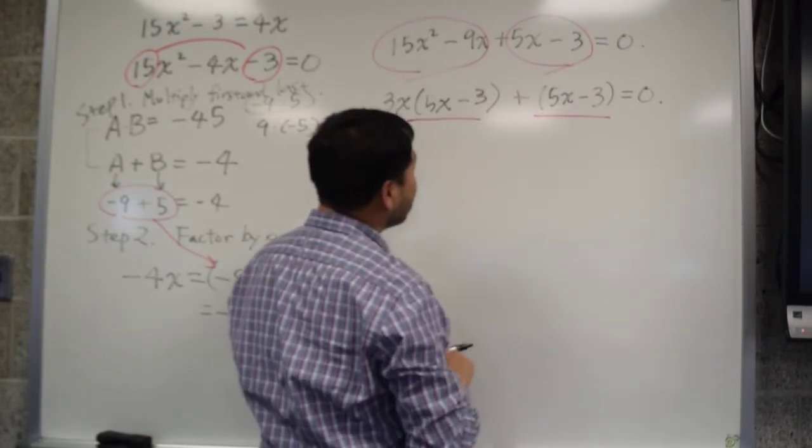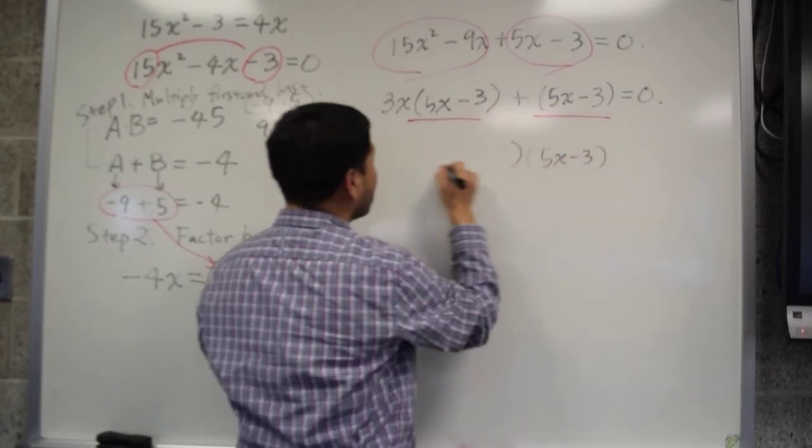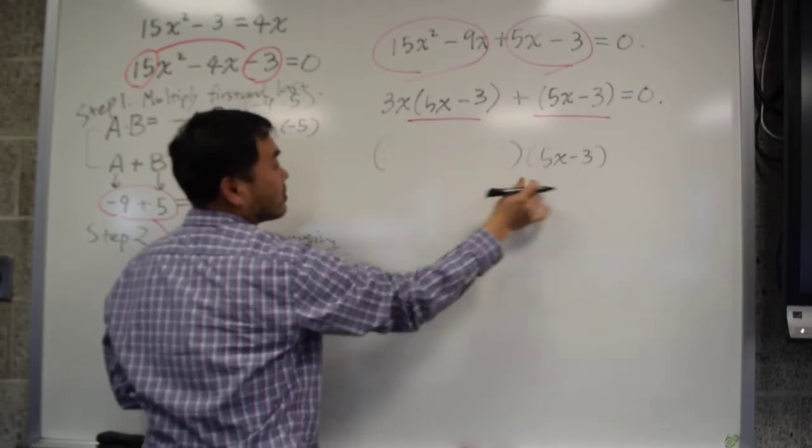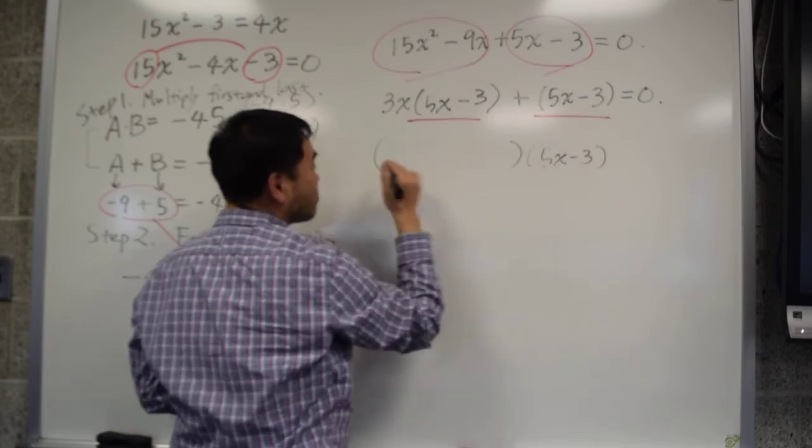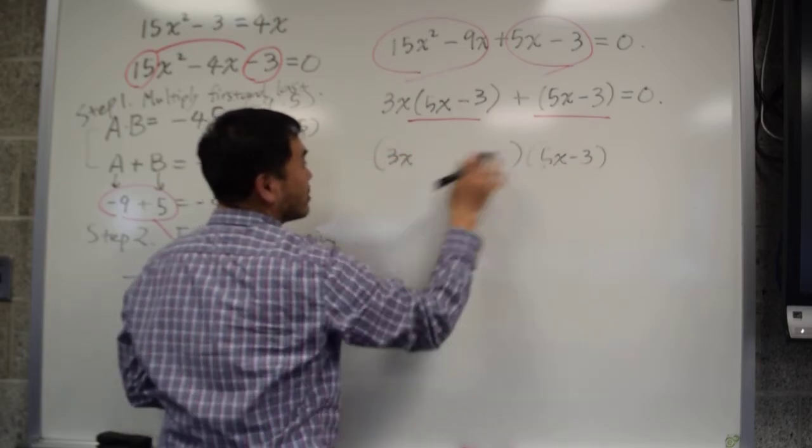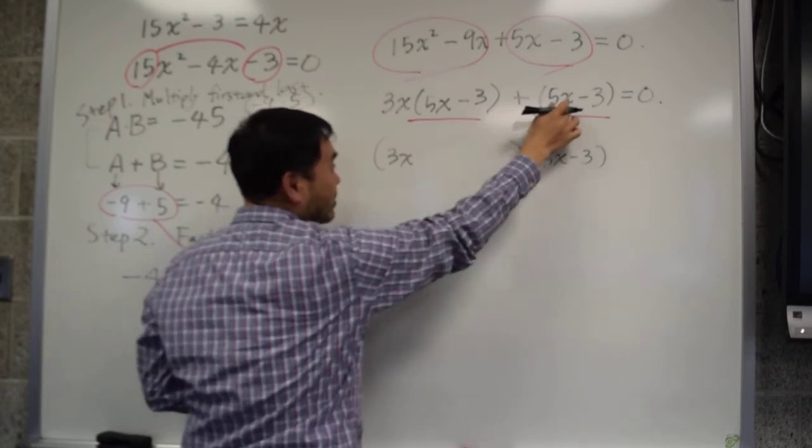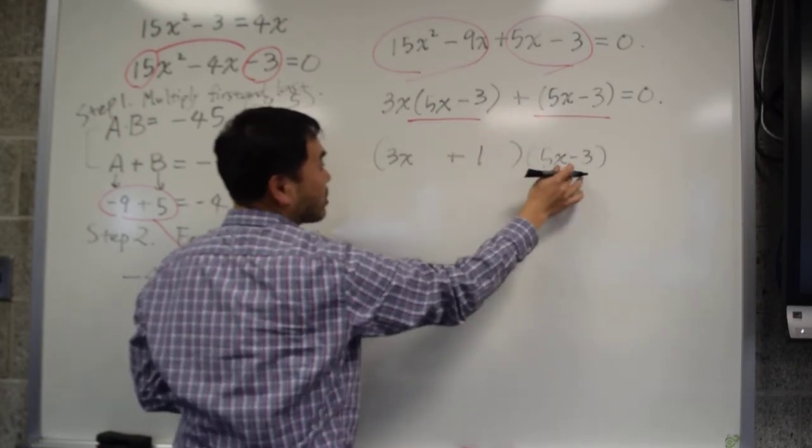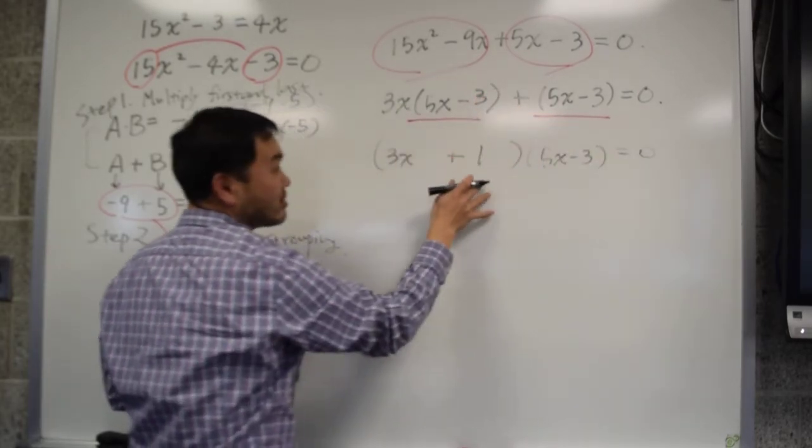You should think of this as 1 times that. So that means you can factor the 5x minus 3 out. Then what's left in here? 3x plus 5. Yes. 5x minus 3 times 3x. 5x minus 3 times 3x gives you this. 5x minus 3 times what gives you that? Times 1. This times 1 is that. So the above is exactly the same as that.